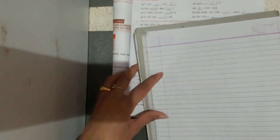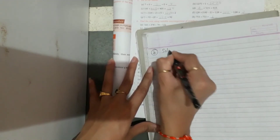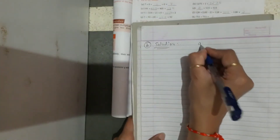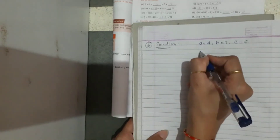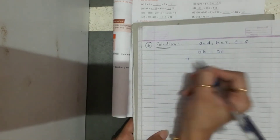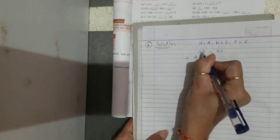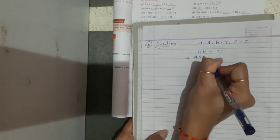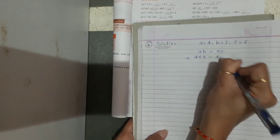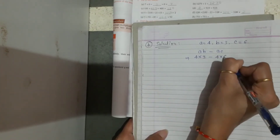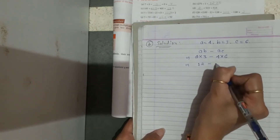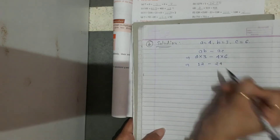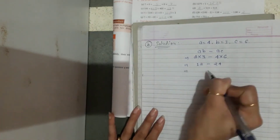For part B solution: A equals 4, B equals 3, C equals 6. AB minus AC equals 4 into 3 minus 4 into 6 equals 12 minus 24 equals minus 12. Both sides give minus 12, so distributive property is verified.